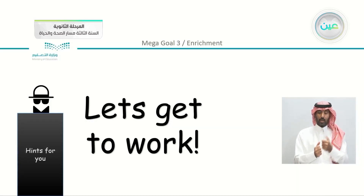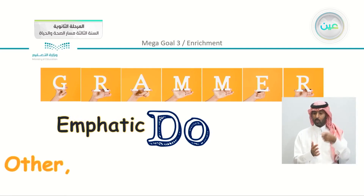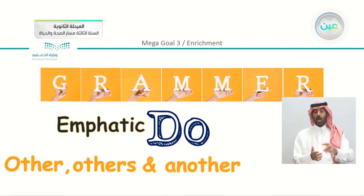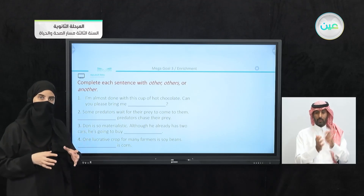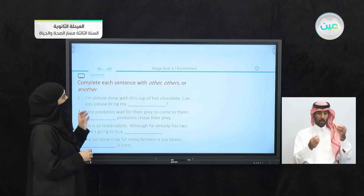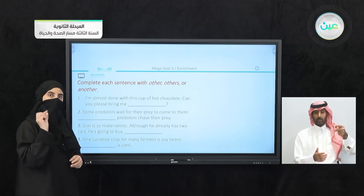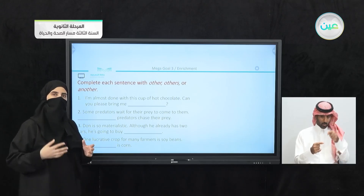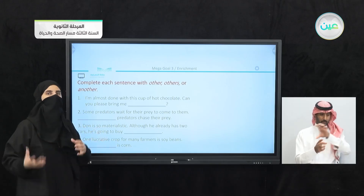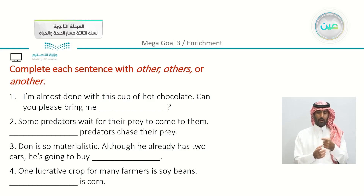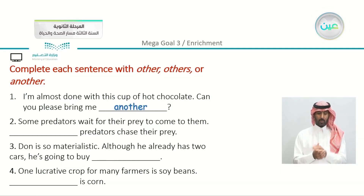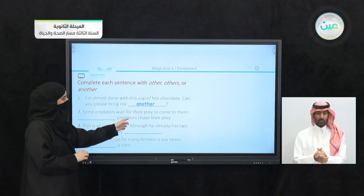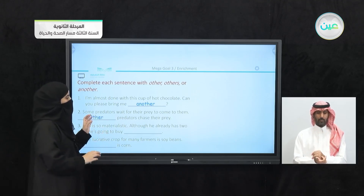We have the first exercise: complete each sentence with 'other,' 'others,' or 'another.' You must understand the sentences and look for both structure and meaning. First example: 'I'm almost done with this cup of hot chocolate. Can you please bring me another?' Second: 'Some predators wait for their prey. Blank predators chase their prey.' The hint is that 'predators' is plural, so we choose 'other predators.'